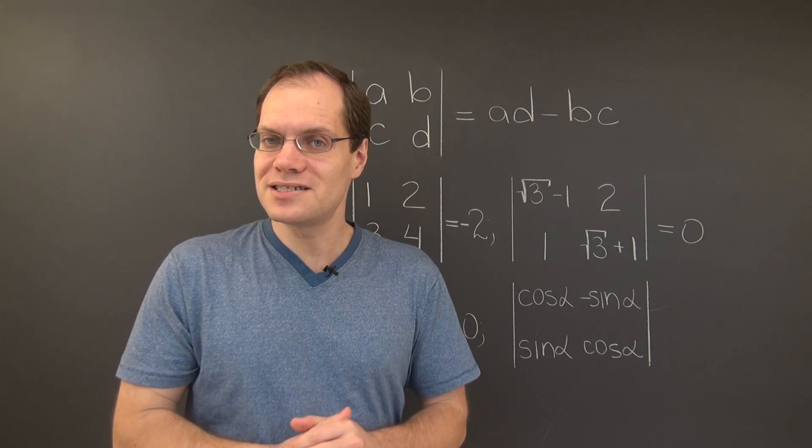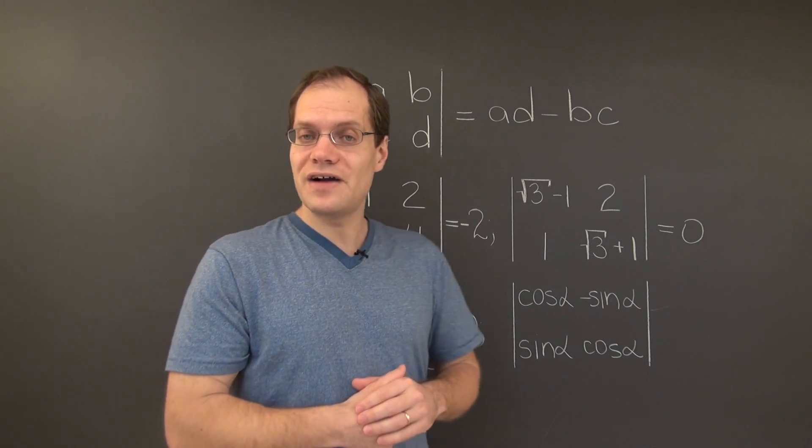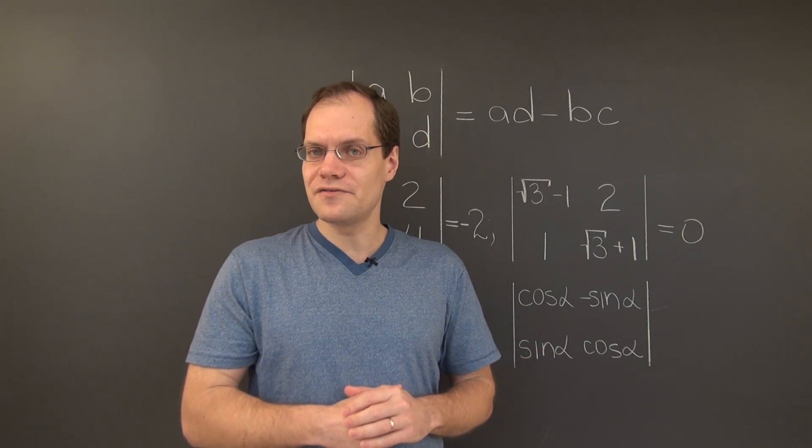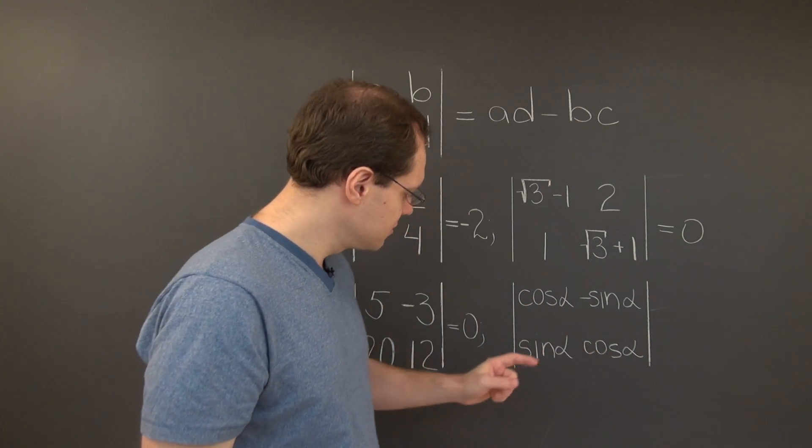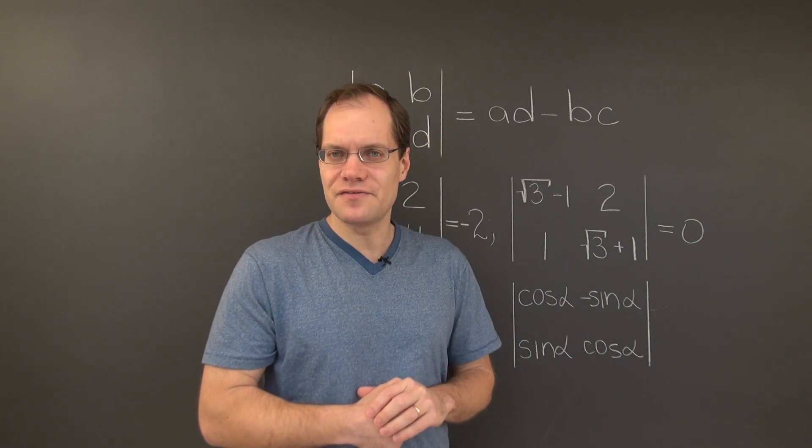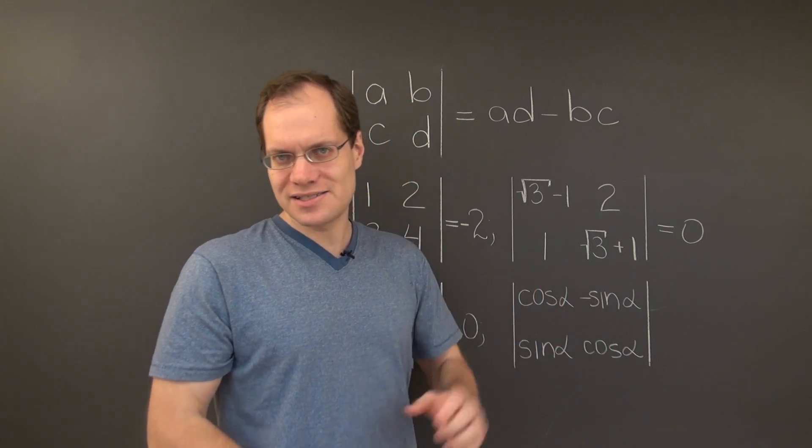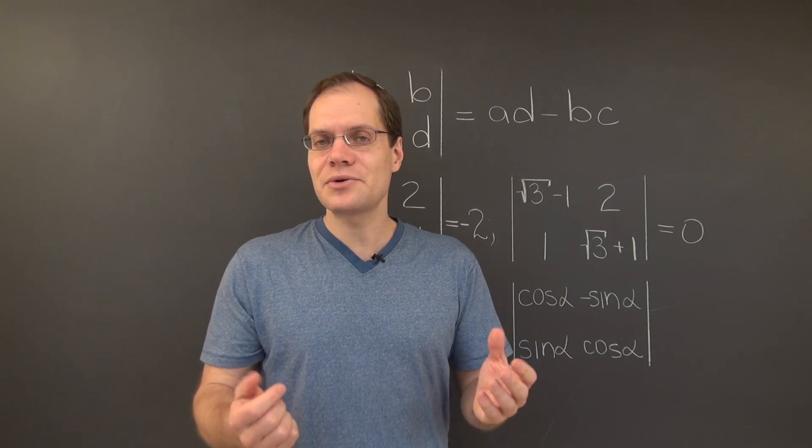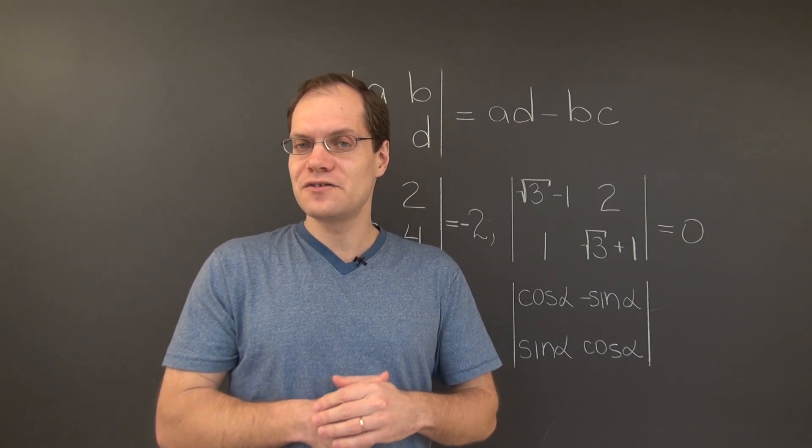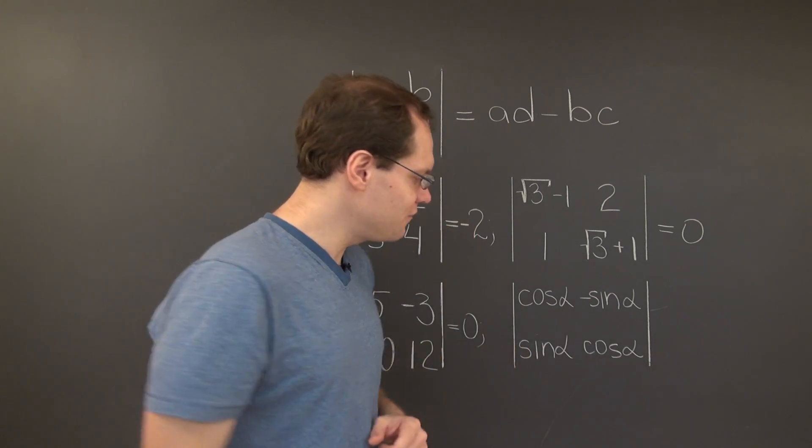Let's see what the determinant tells us. The determinant of this matrix, for a general value of alpha, is this times this, which is cosine squared alpha minus this times this, which is minus sine squared alpha. So the determinant is cosine squared alpha plus sine squared alpha. According to the fundamental identity of trigonometry, that expression equals 1 for all values of alpha.